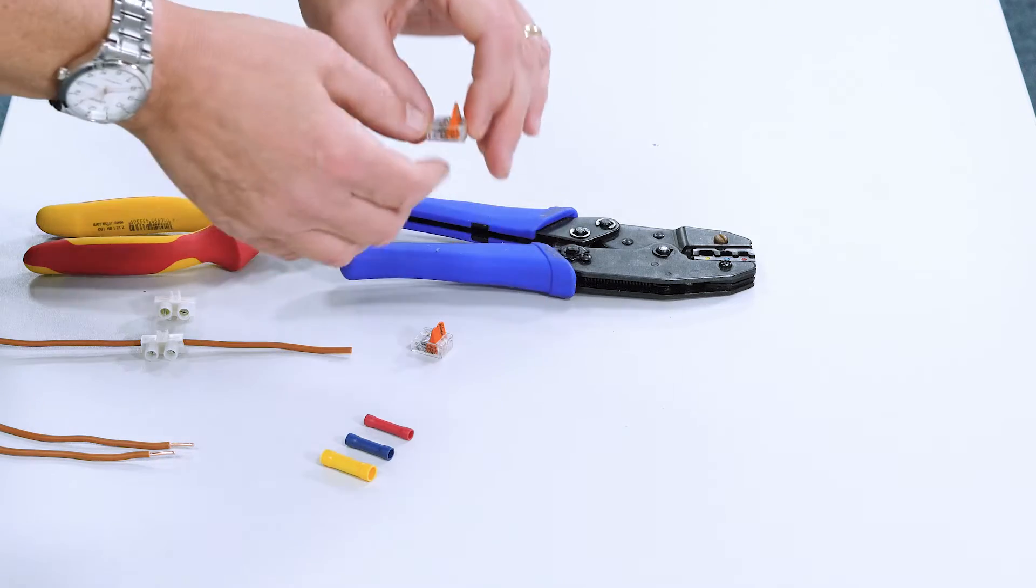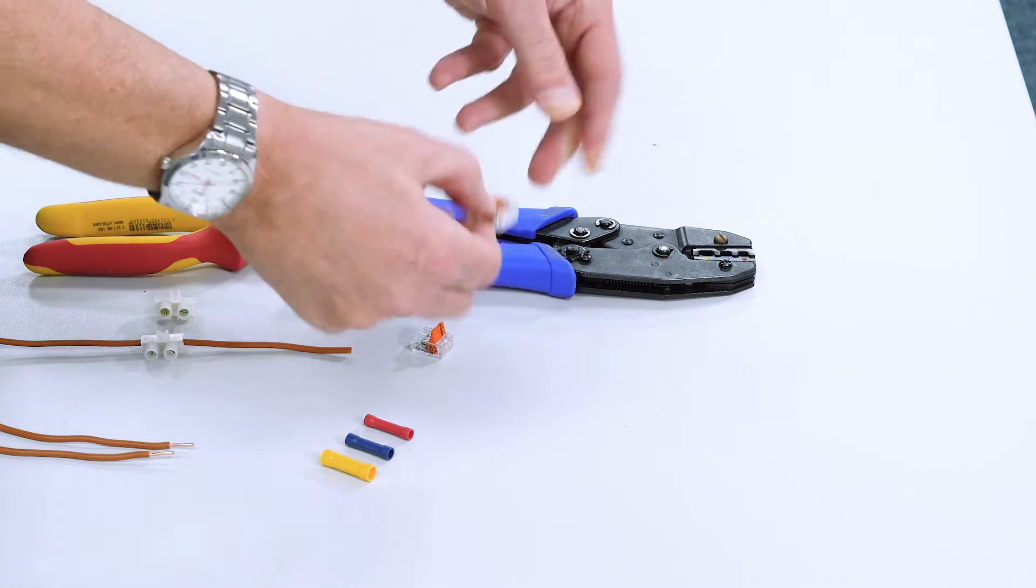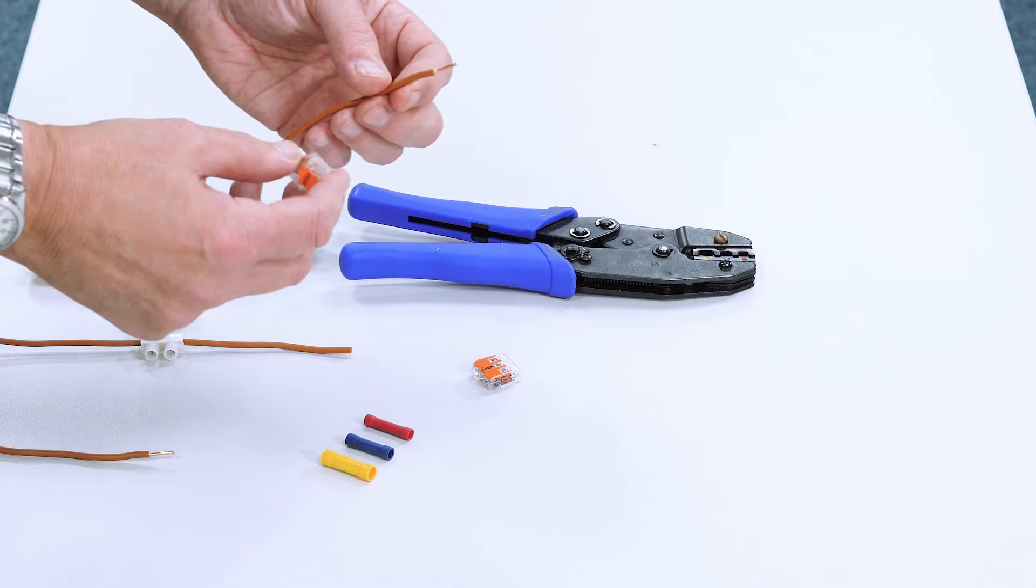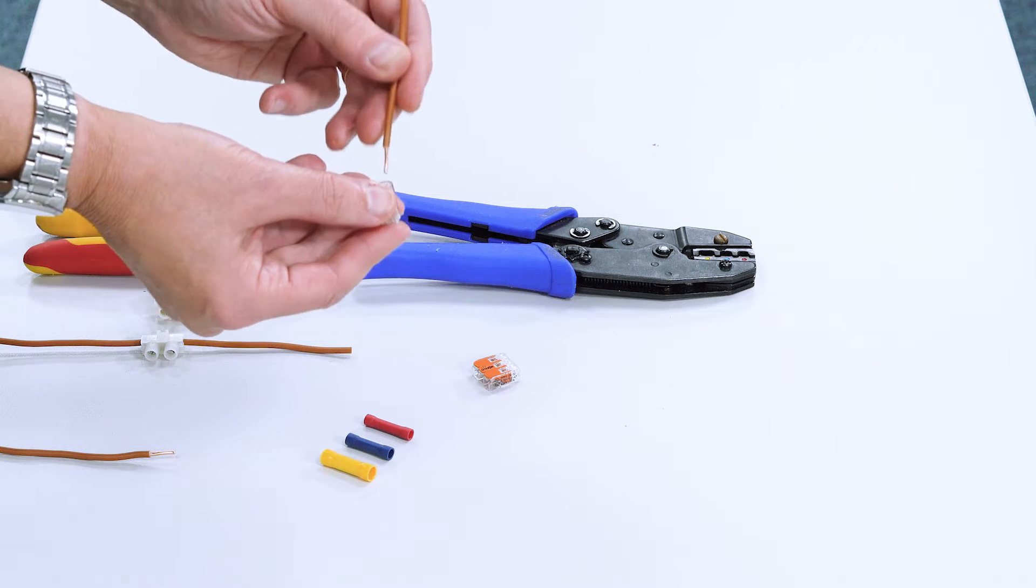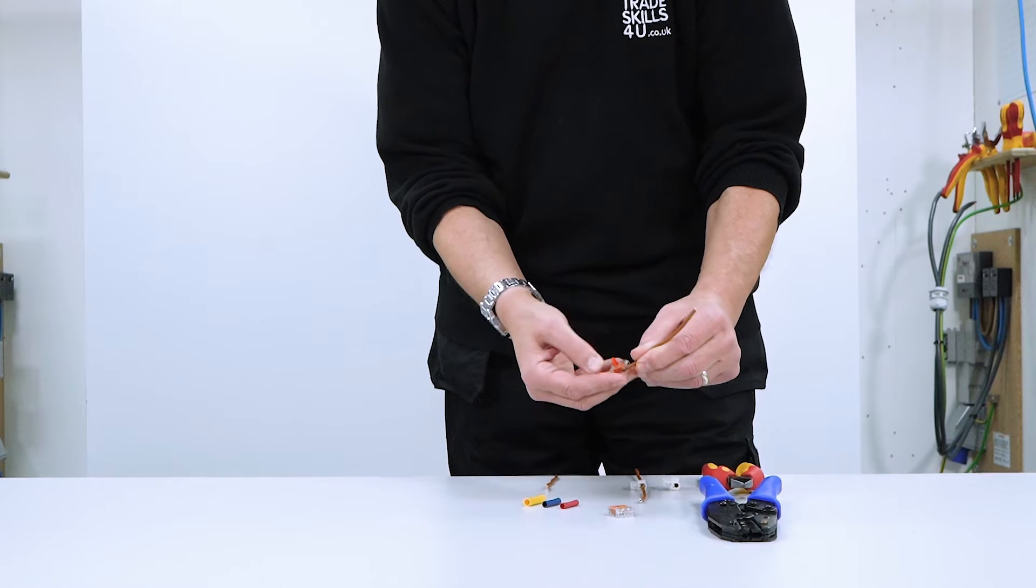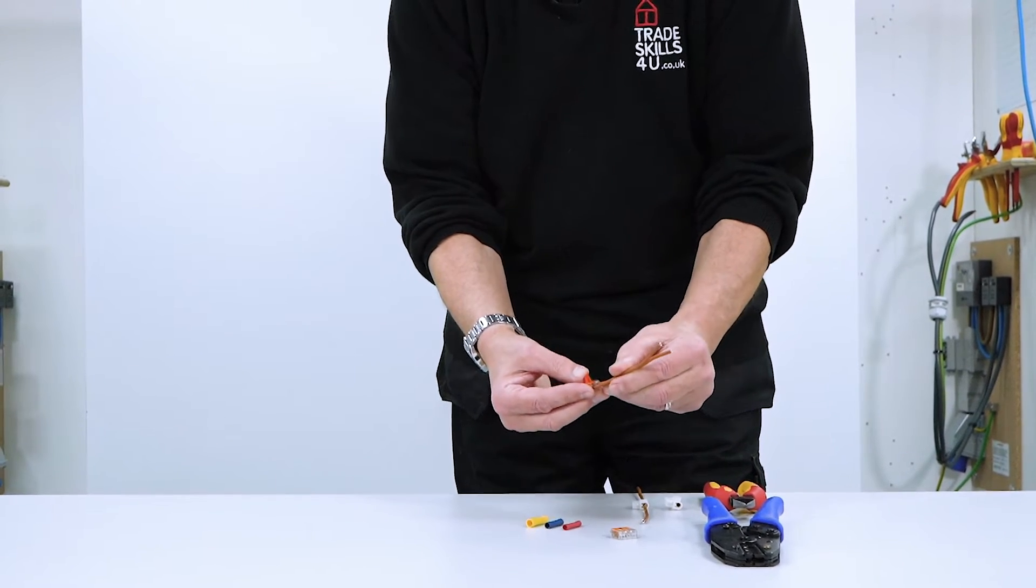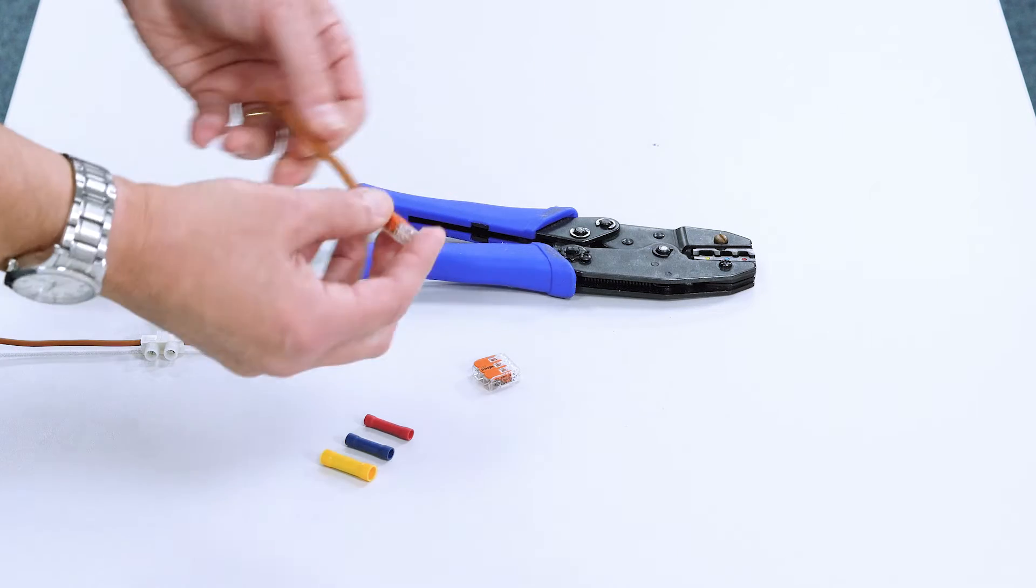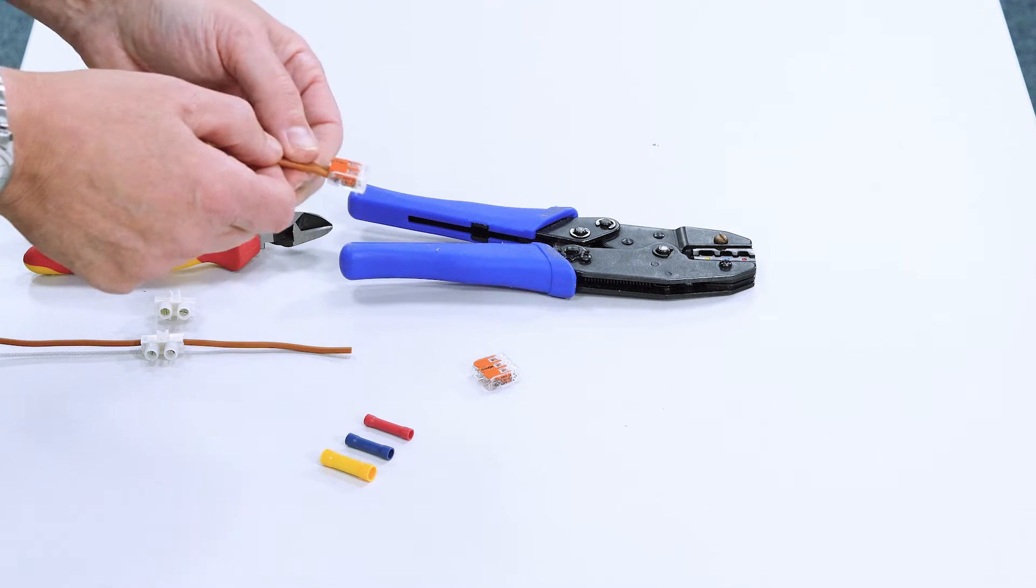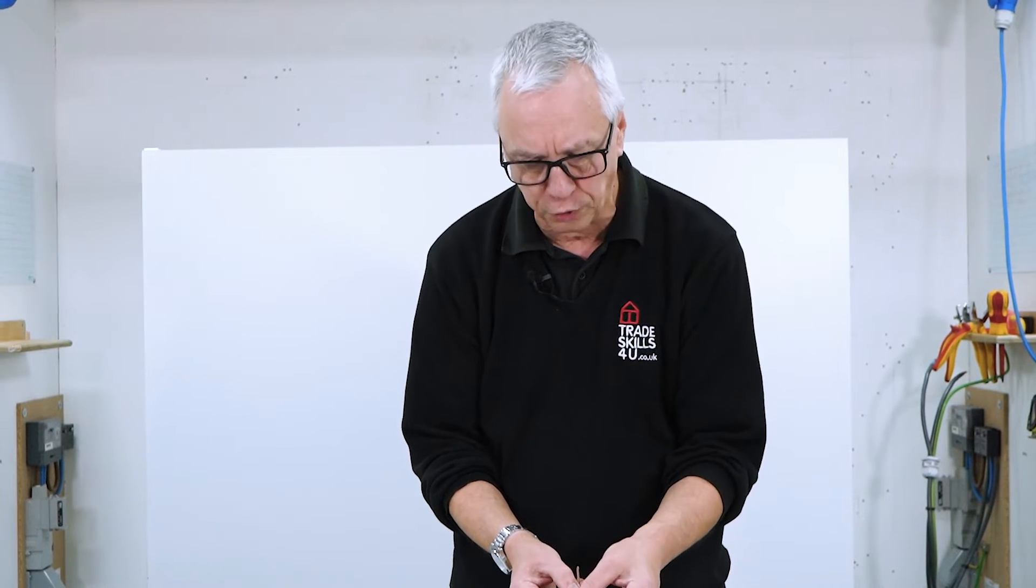We've then got the lever connector where you've got this thing where these levers push down. You've got to prepare your conductor to the right length that slides in there, make sure there's no copper visible and the lever clamps down there and hey presto, there we go. Nice join. These are great because they're so quick and easy to use. The problem with them is that they're a bit bulky so it could present a problem if you're tight on space.